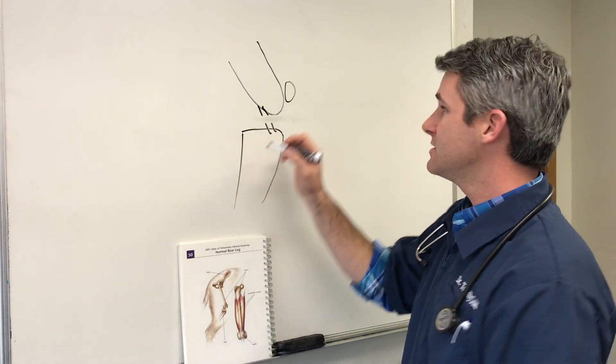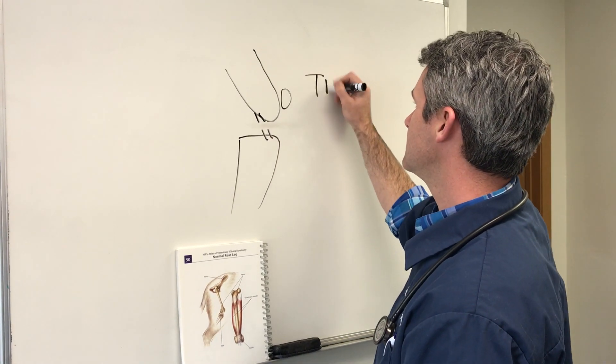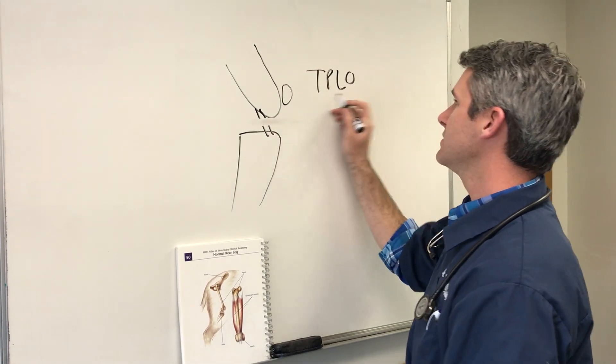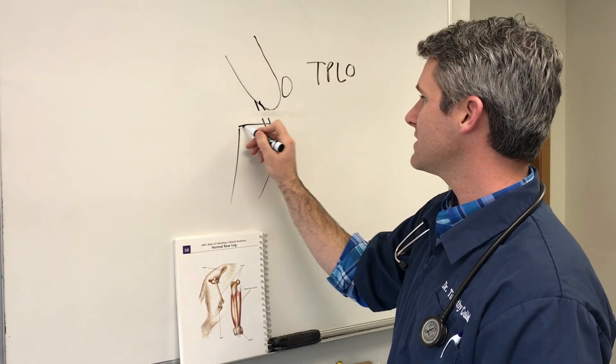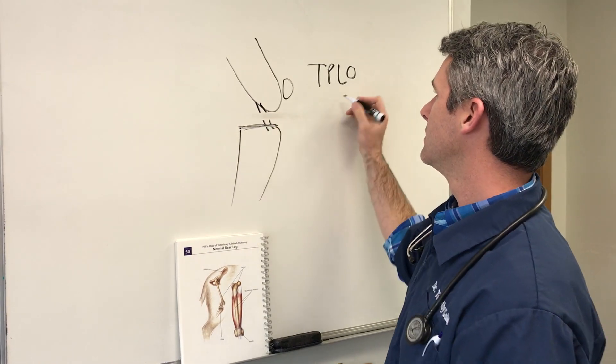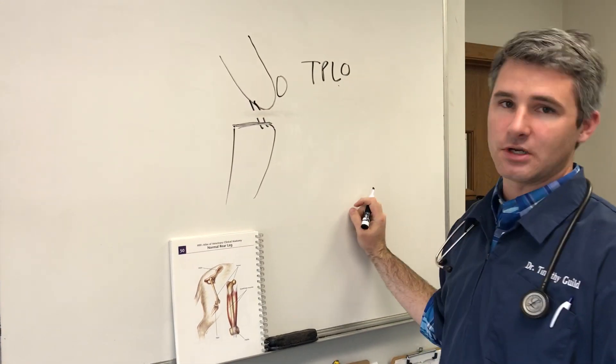If you're going to have this TPLO procedure done, what does that stand for? Tibia, it's that bone. Plateau, that's the top of this. Leveling osteotomy is what's done in the surgery. Osteotomy is cutting the bone.